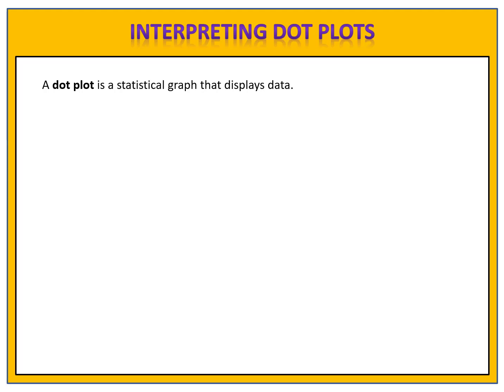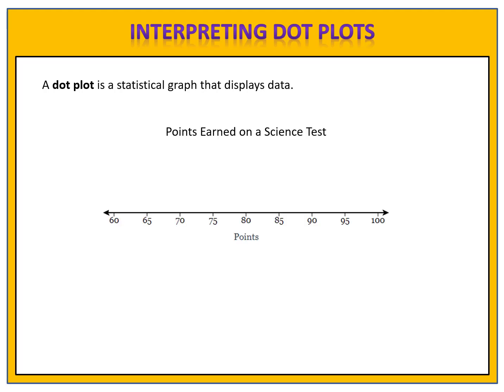Suppose that a science class takes a test. The teacher wants to display the grades that students earned, and decides to use a dot plot. On the number line, the teacher puts the number of points that students earned, and puts one dot for each student's score.